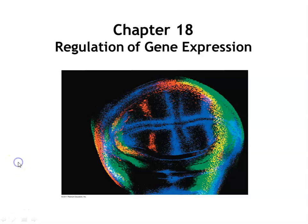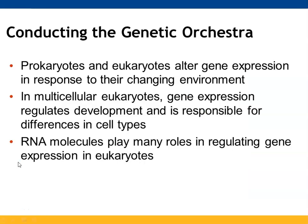Chapter 18 is all about regulating how genes are expressed — conducting the genetic orchestra. Prokaryotes and eukaryotes will determine what genes get expressed and how often they should be expressed based on their environment. When dealing with multicellular eukaryotes, this expression of genes is critical for development and helps explain differences in cell types. RNA molecules are a key part of gene expression in terms of transcription and translation, and they also play other important roles in eukaryotic cells.